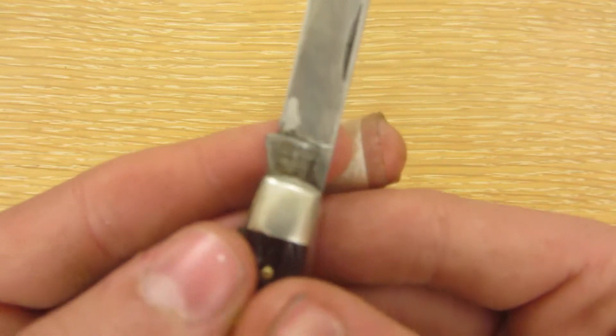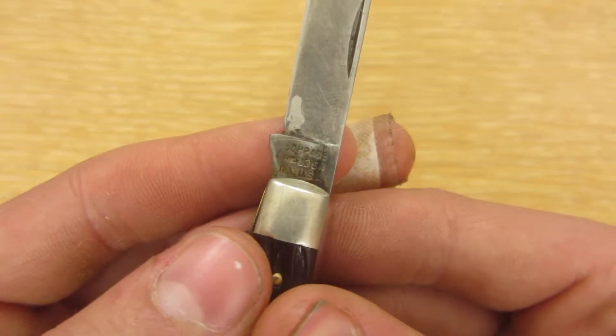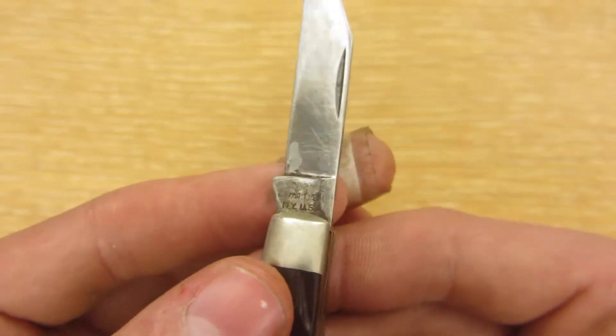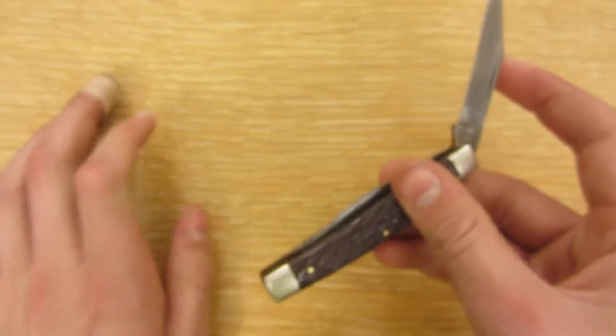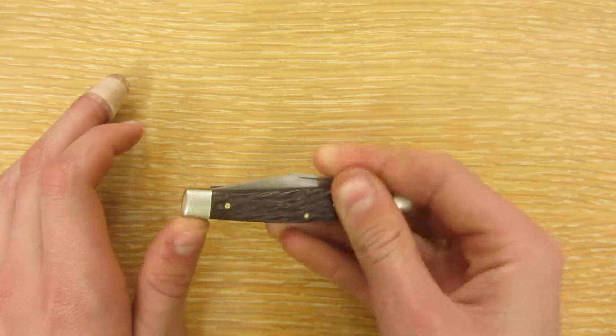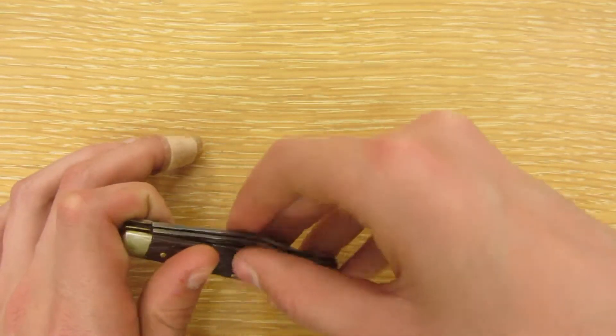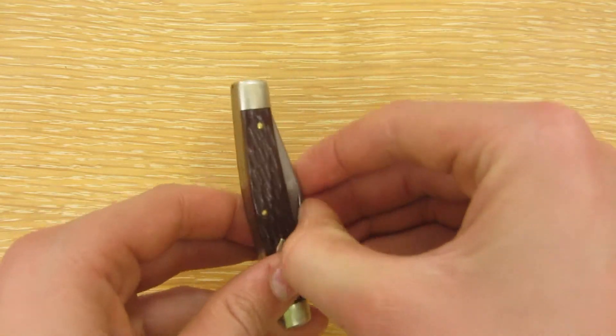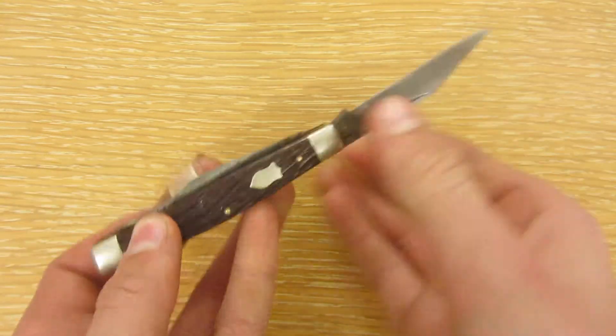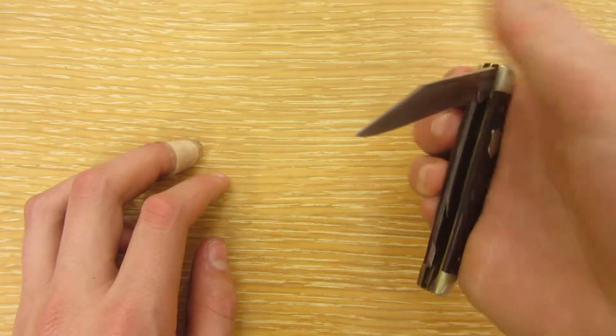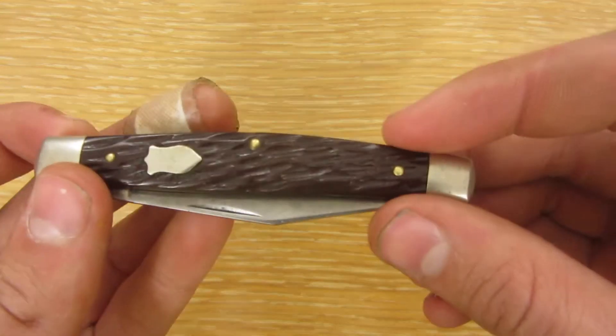As you can see here, Schrade Walden NY USA. I don't exactly know what particular knife this is, if anyone else knows that would be good, but it's one of the old Schrade ones before they went to China. It's got the bone handles, which are really cool.